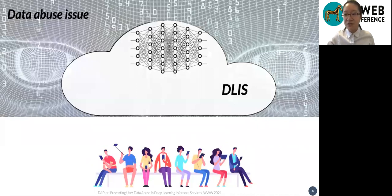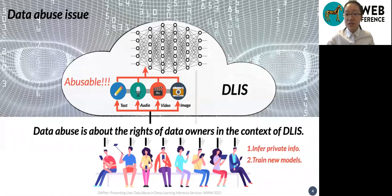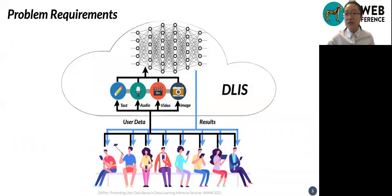However, a unique issue has been raised with the rapid development of deep learning inference services. In the context of deep learning, real-world data are always precious assets because they are the key ingredient in training new DL models. Greedy web service providers may collect and exploit the inputs of their deep learning inference services, which are excellent sources of real-world data, to train new models under the table. Data abuse is about the right of data owners. End users have been worried about whether their inputs will be exploited to train other models unrelated to the deep learning inference service they subscribe.